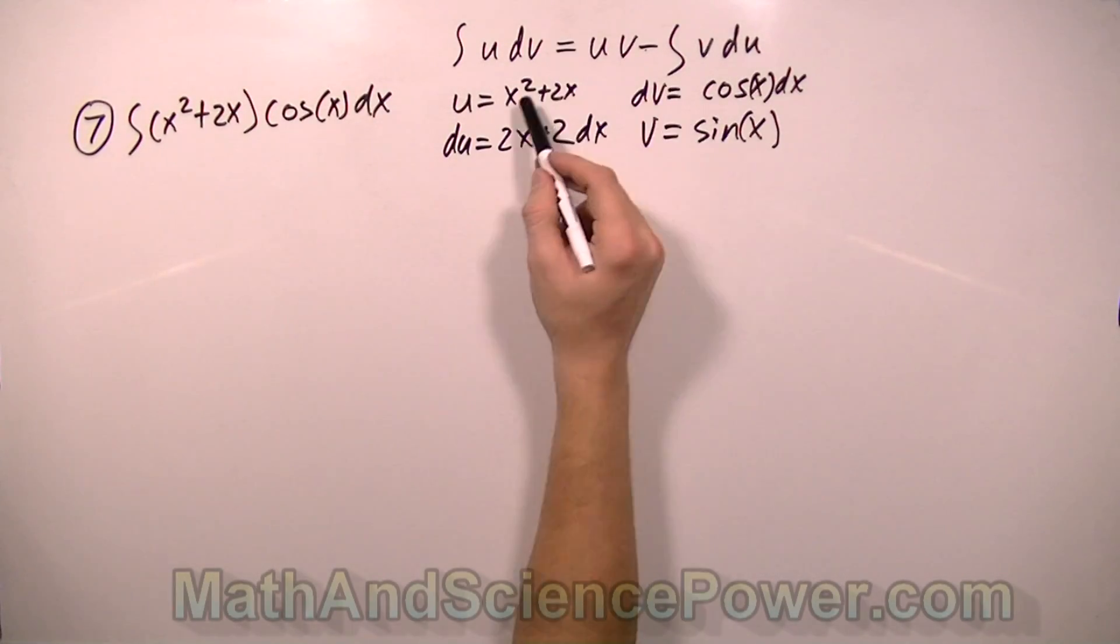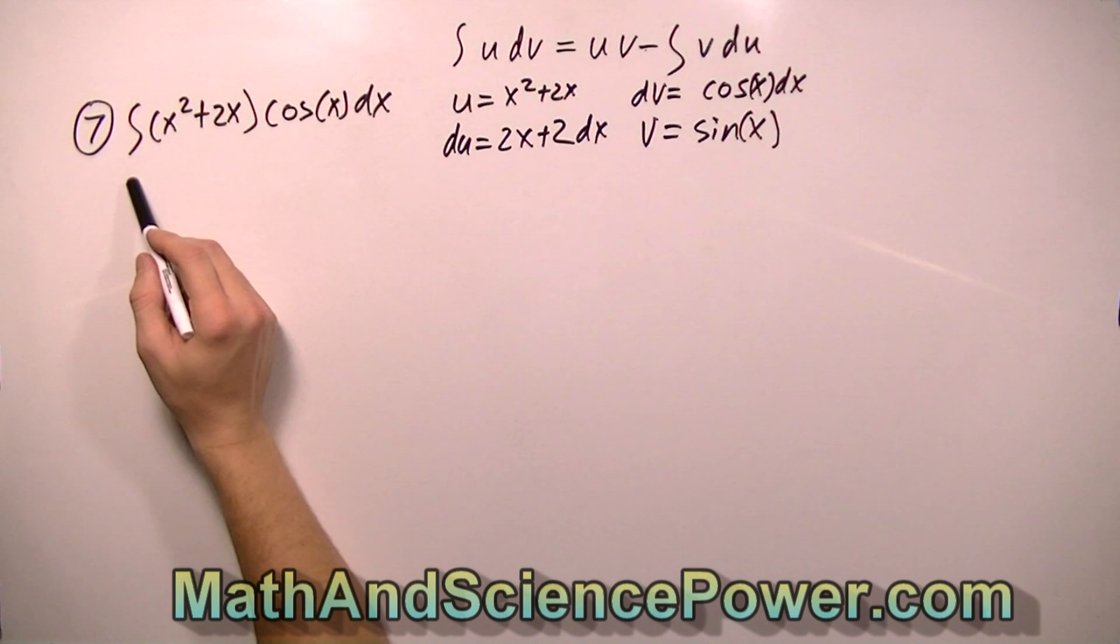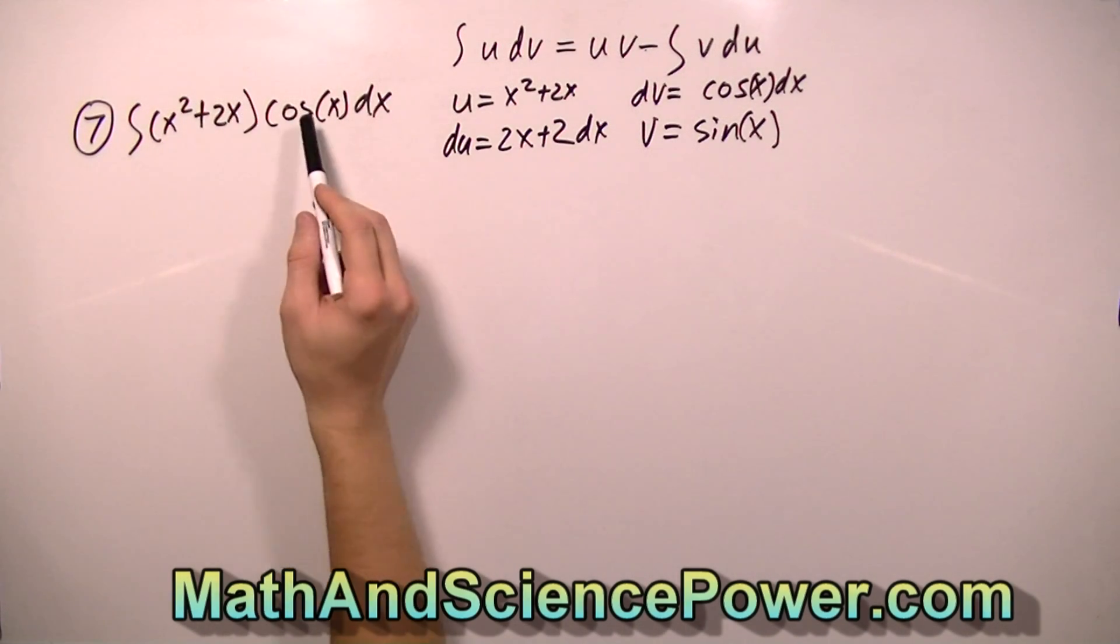So now take a moment and see if you can plug these values into this formula, and see if you can tell us what the integral of the quantity of x squared plus 2x times cosine x dx will be equal to. And when we come back, we'll compare our answers, and I'll take you through the rest of the integral.